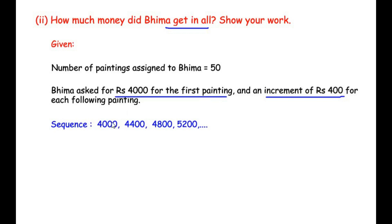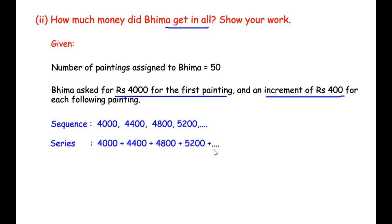For the first painting Bhima charges 4000, and for each consecutive painting he charges 400 more — so 4400, 4800, 5200, and so on up to 50 paintings. Since we need the total amount, we work with the series: 4000 + 4400 + 4800 + … This is an arithmetic progression with a common difference of 400, so we use the sum of the series formula.